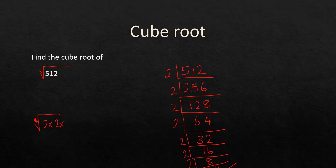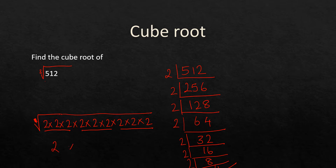Since it's a cube root, for every 3 of the same factor we take 1 outside. We have nine 2s — that gives us three groups of three. So the answer is 2 × 2 × 2 = 8. The cube root of 8 is 2 because the cube root cancels the power of 3.